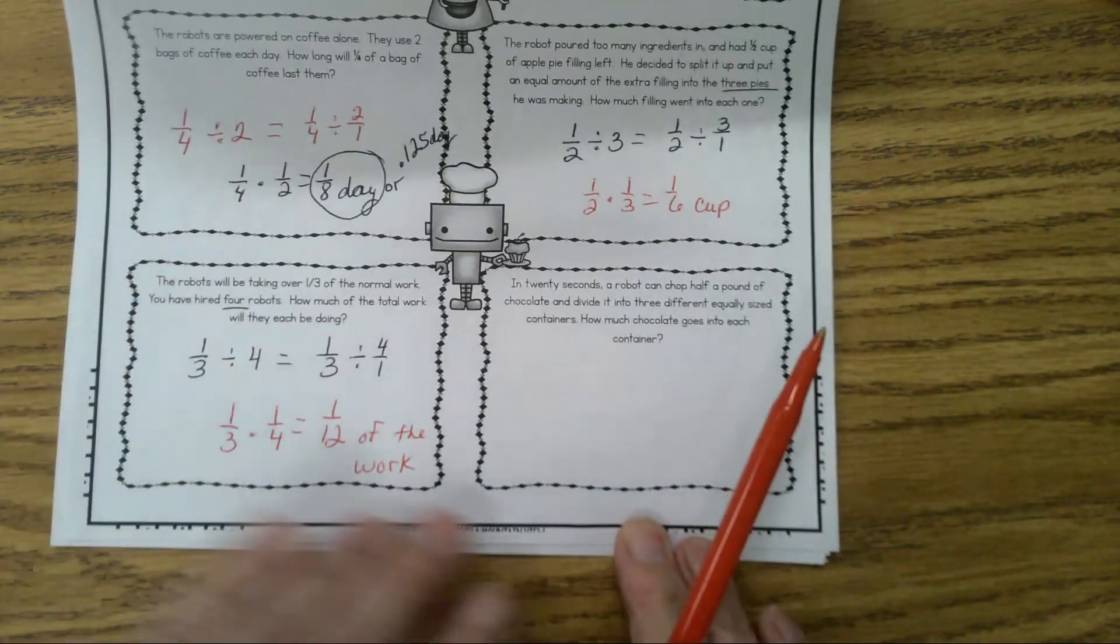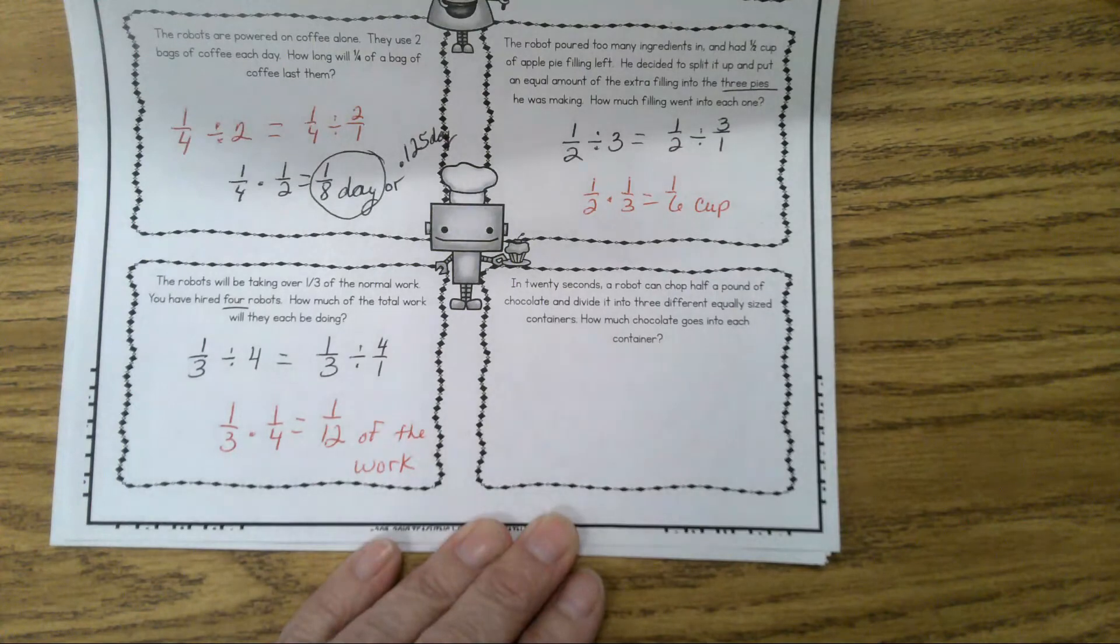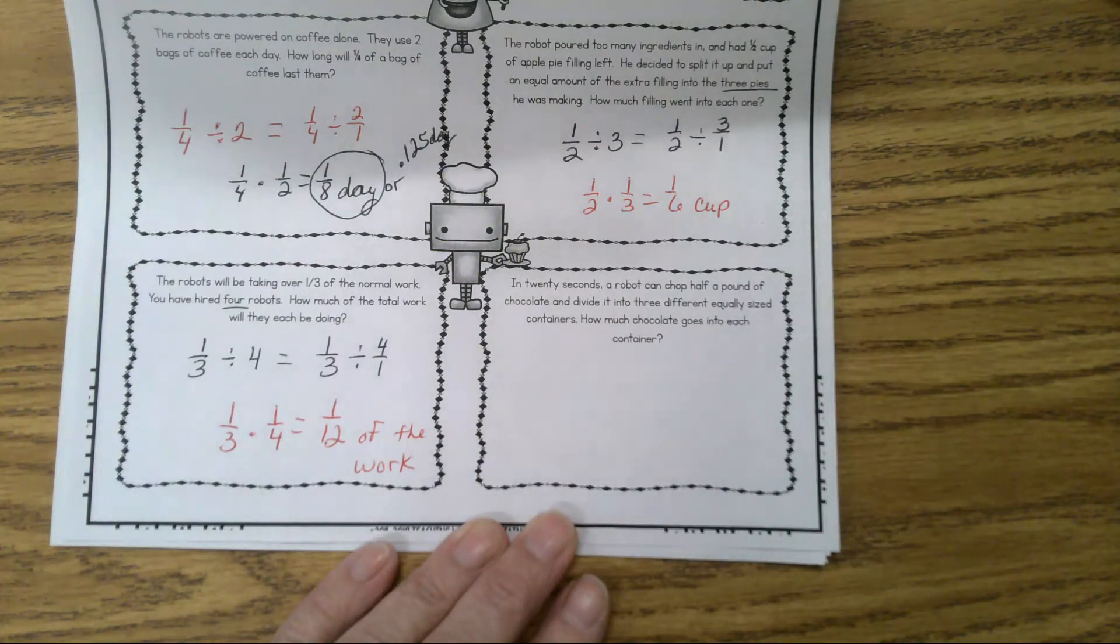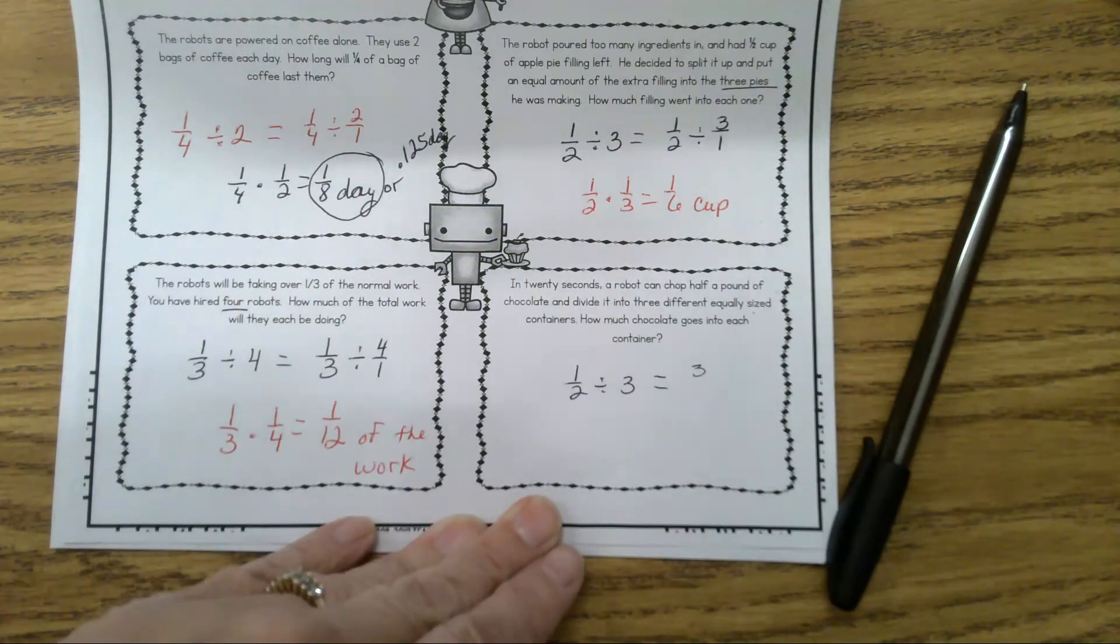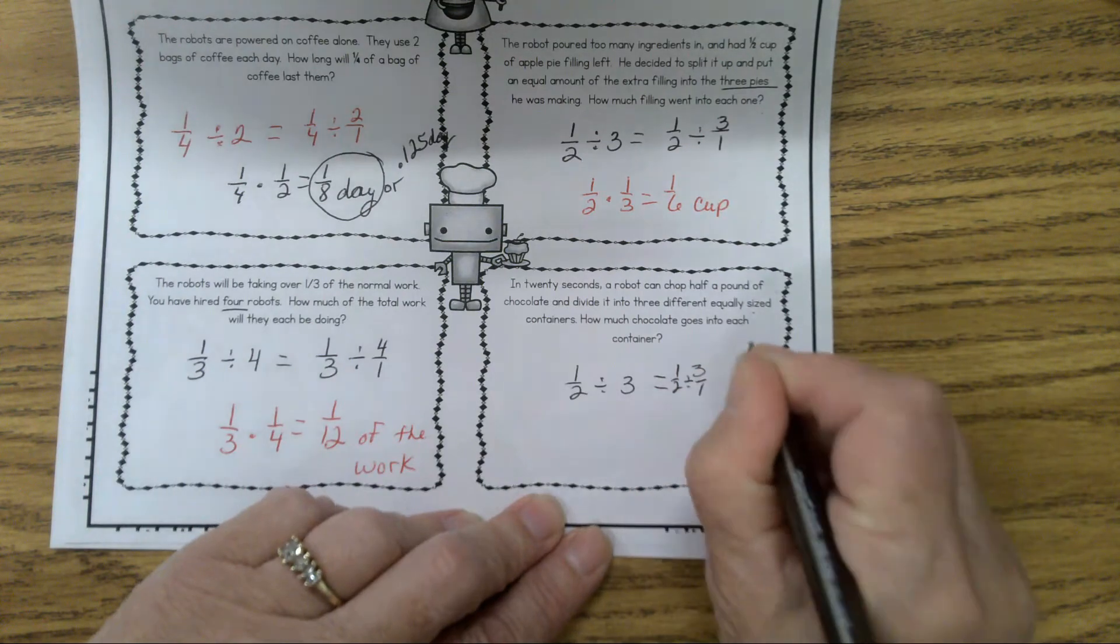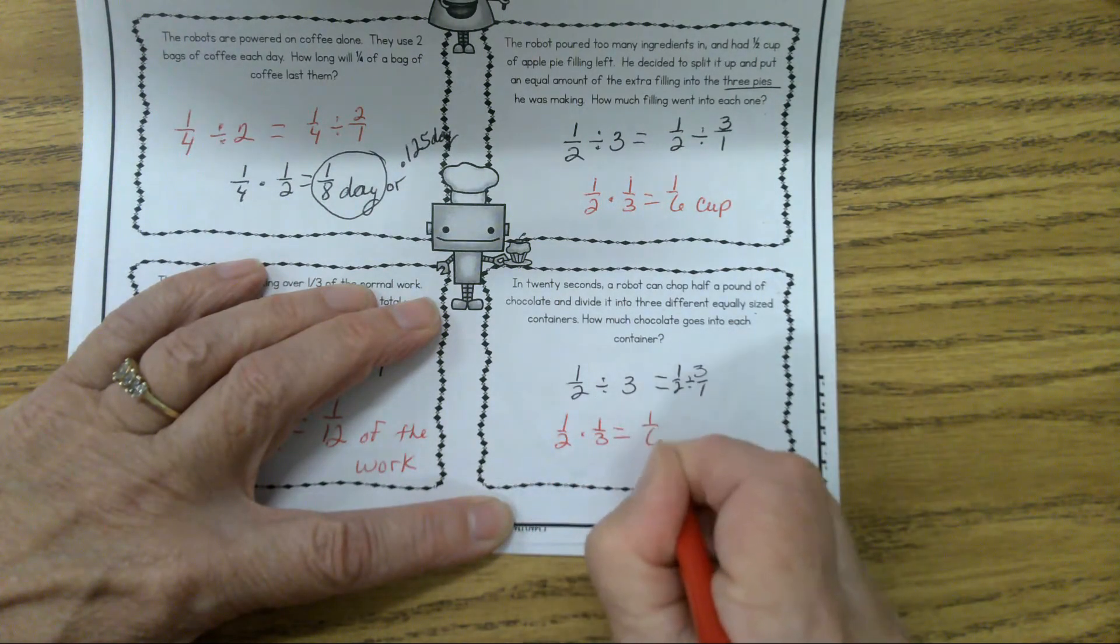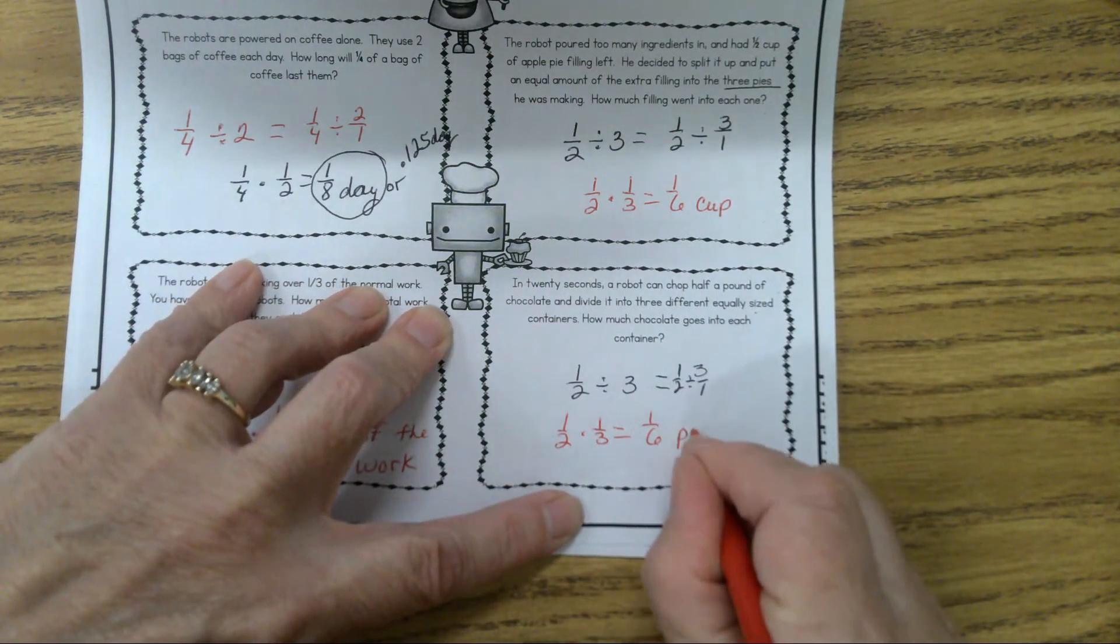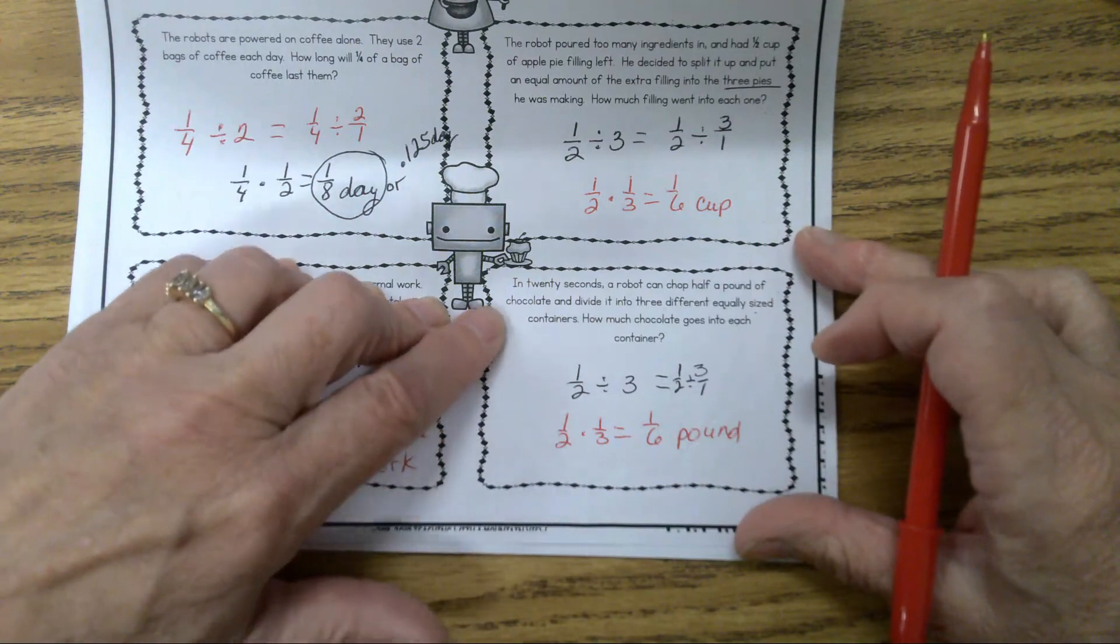Let's do the last problem here. I have a volunteer to read this. Sanchez reads. So let's read this one carefully. On this you have 1/2 divided by 3. So that will be 1/2 divided by 3 over 1. So 1/2 times 1/3 equals 1/6 of a pound. How much chocolate goes into each container? A sixth of a pound.